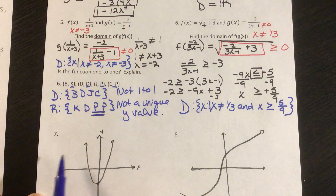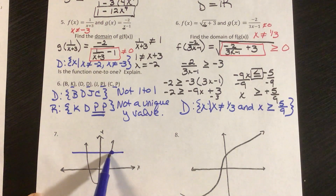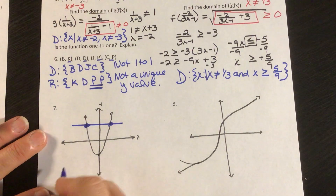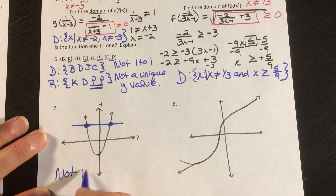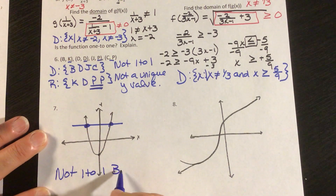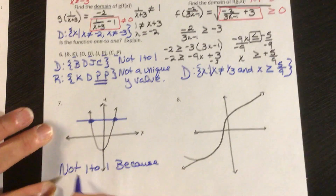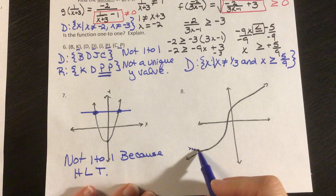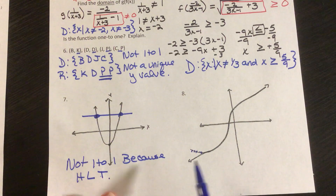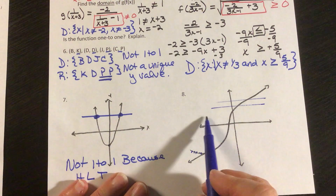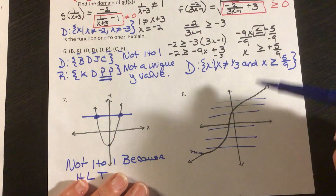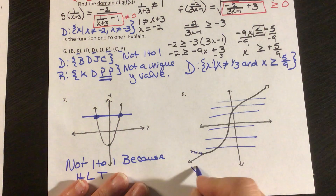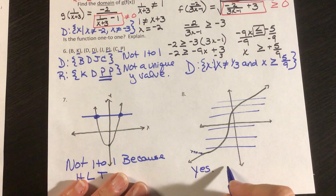For number 7, I can use the horizontal line test. If a horizontal line hits the graph in more than one spot, then this is not 1 to 1. For number 8, if I look at the horizontal line test, the horizontal line always hits the function in one spot. So yes, this function is 1 to 1.